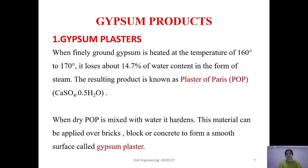Coming to gypsum products, the first one is gypsum plaster. When finely ground gypsum is heated at a temperature of 160 to 170 degrees, it loses about 14.7% of its water content in the form of steam. The resulting product is Plaster of Paris, or POP. Its chemical composition is CaSO4·0.5H2O, that is calcium sulphate hemihydrate. When dry POP is mixed with water, it hardens.